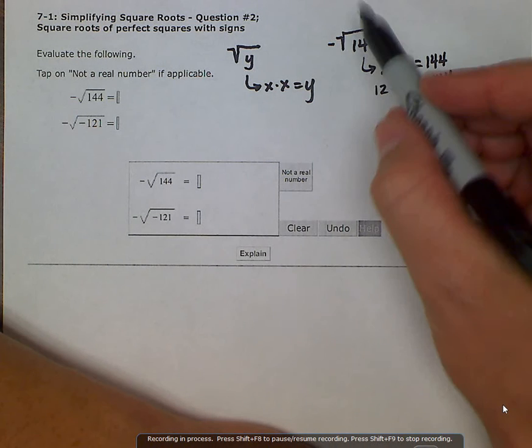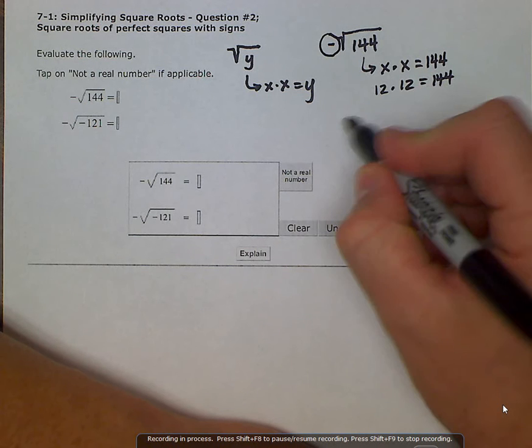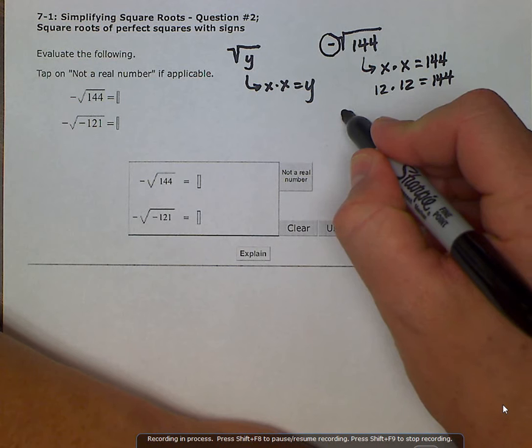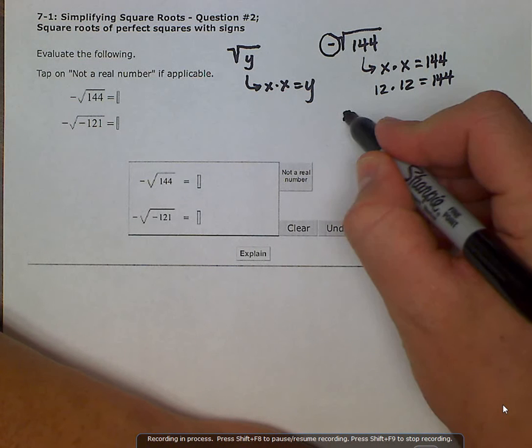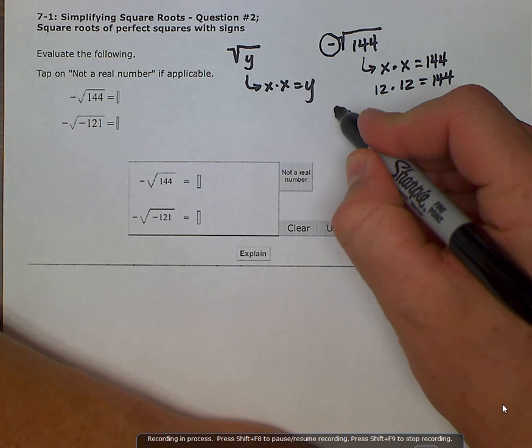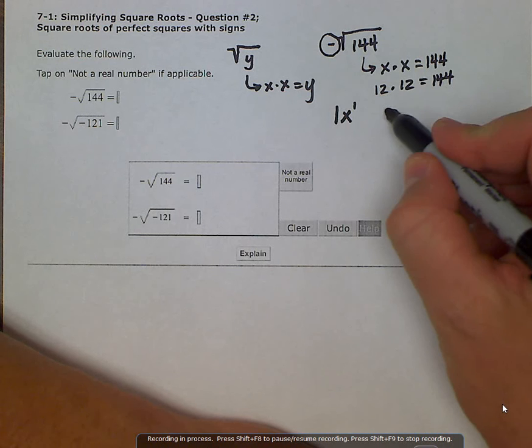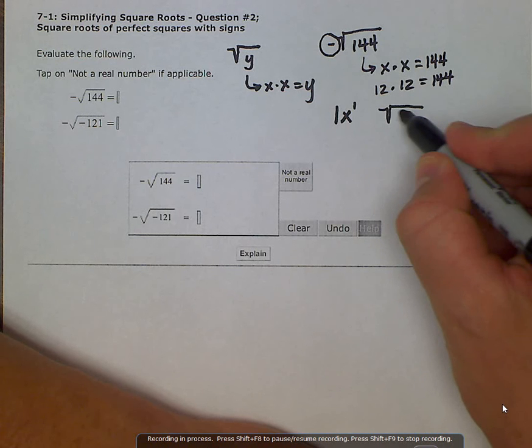But let's look at this negative sign out front. Just like we have when we say x, we have some implied numbers. Well how many x's do we have here? We have 1x, but we don't write 1x to the first power. These numbers are implied. Same thing when we say root 144 or the square root of 144.